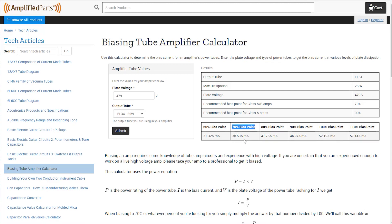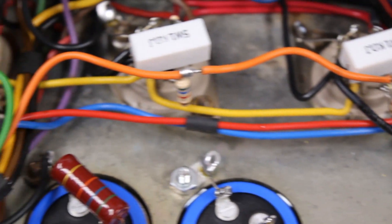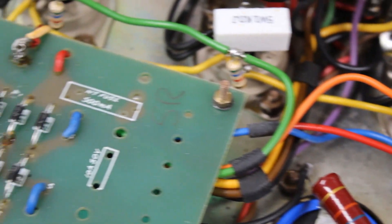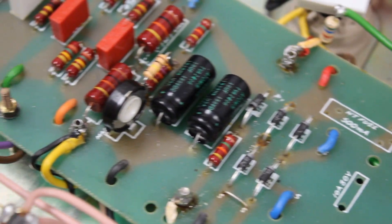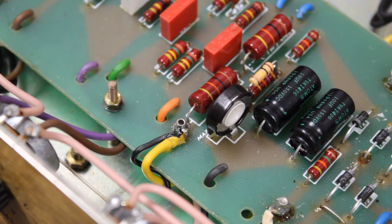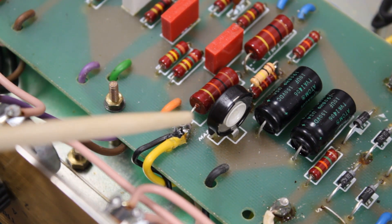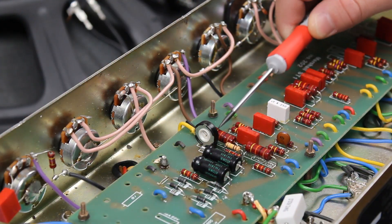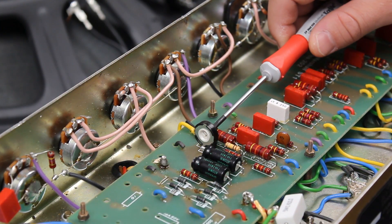If you aren't sure, 70% is a good place to start. As you can see, the calculator is calling for us to bias our amp at 36.53 milliamps. Now it is time to locate the trimming pot on your amp.